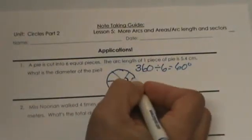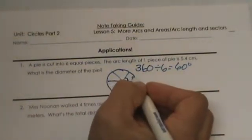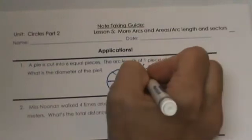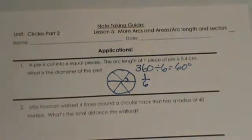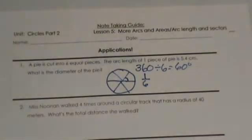We also know that if it is cut into 6 equal pieces, each piece represents 1/6 of the circle. We are going to use the proportion method that we used earlier. Do you remember the proportion method? It works like this.